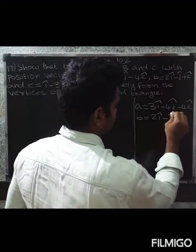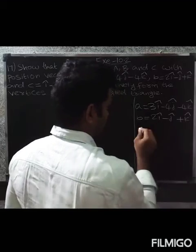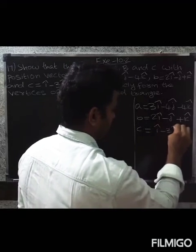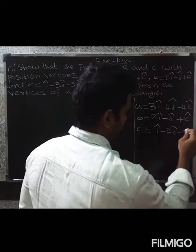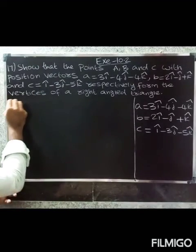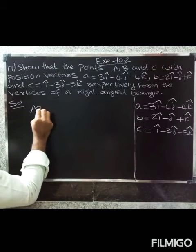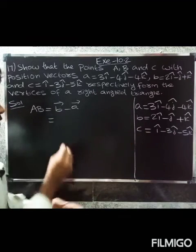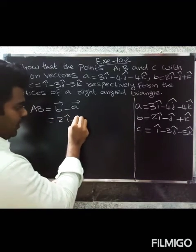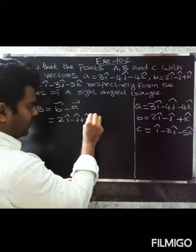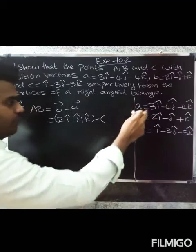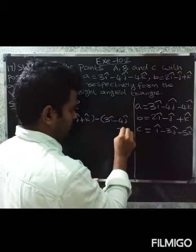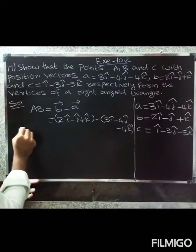We have b equal to 2i - j + k and c equal to i - 3j - 5k. First, compute AB: AB equals b vector minus a vector. So b equals 2i - j + k minus a equals 3i - 4j - 4k.